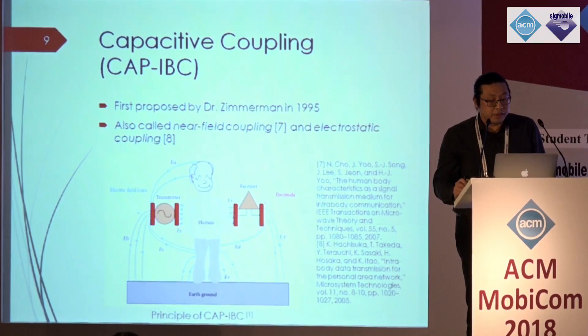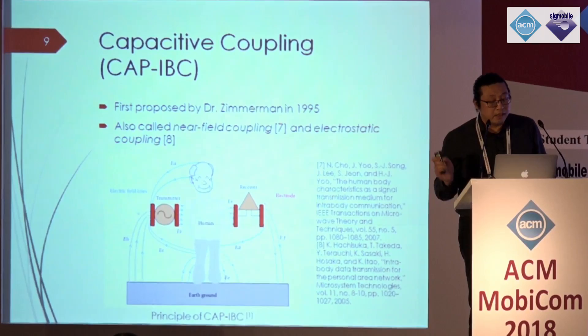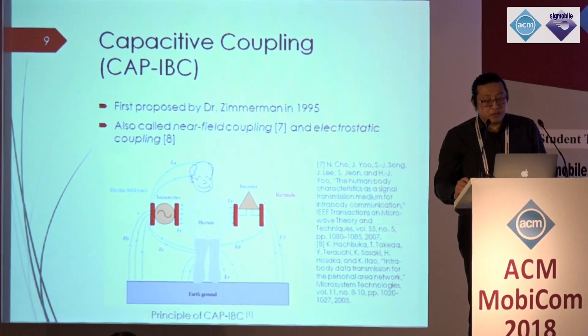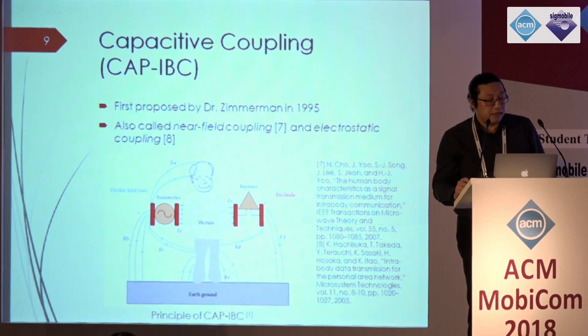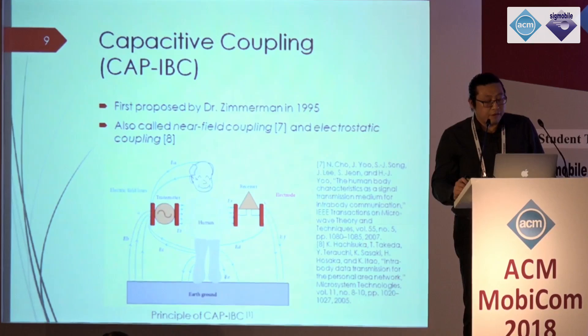A large electric field, ET in the figure, is introduced to the human body by the signal electrode node of the transmitter. The conductivity of the human body not only couples the electrical field to the environment but also serves as a conducting plate that induces electrical fields to other conducting plates. The electrical fields in the environment or through the external earth ground serve as the ground return path. At the receiver, the received signal is the electric potential difference between ER, EF, and ED, and is detected when ER is much larger than EF and ED.